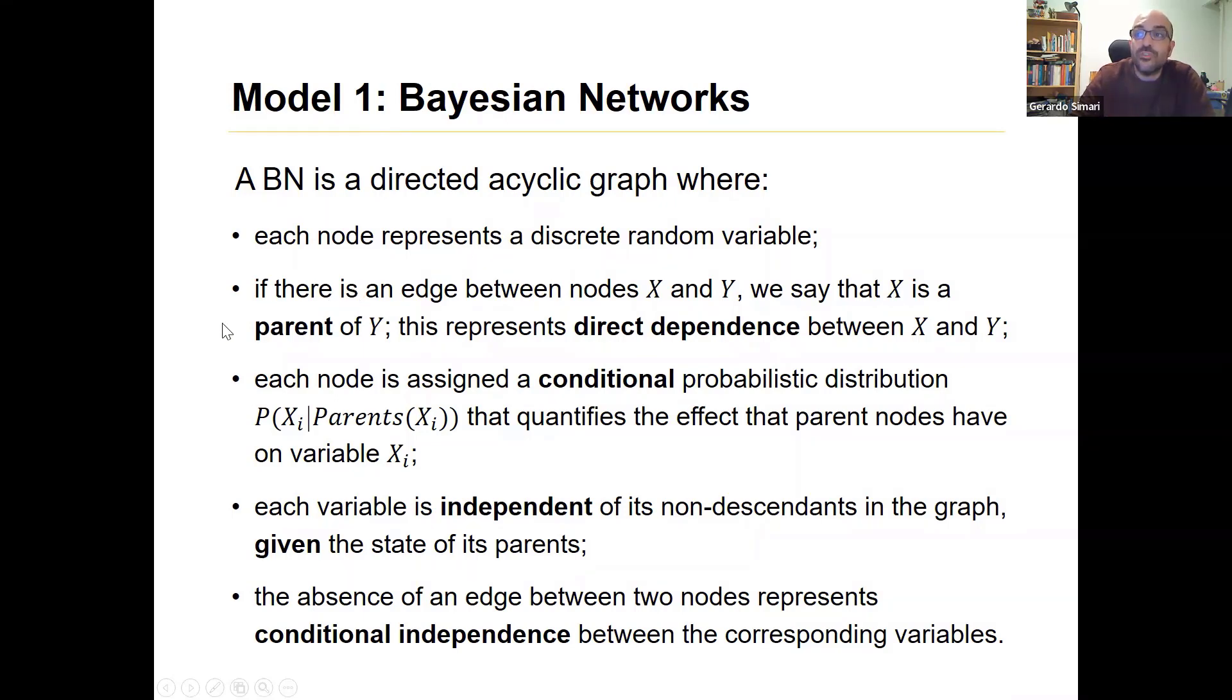Each node represents a discrete random variable, typically in examples we do boolean random variables. And if there's an edge between two nodes X and Y, we say that X is a parent of Y, and this represents direct dependence. We'll see this in a quick example in just a second.